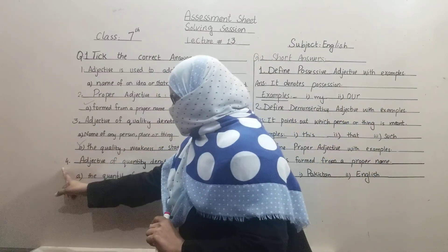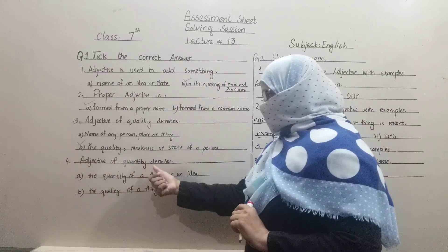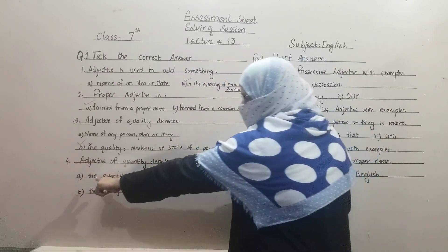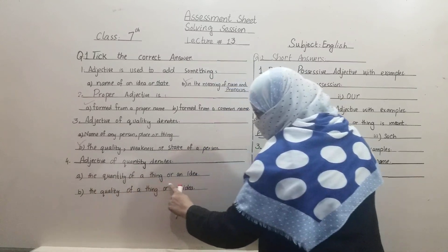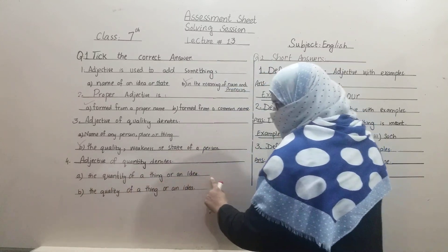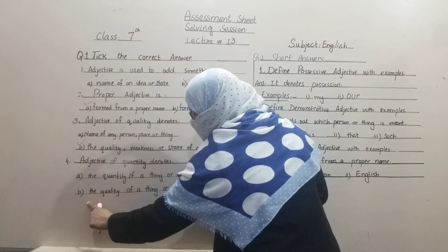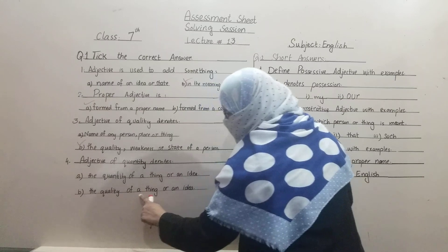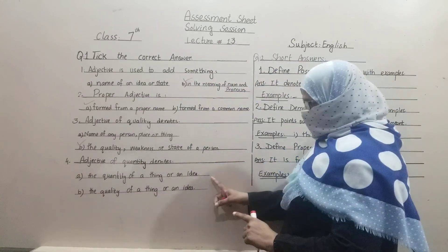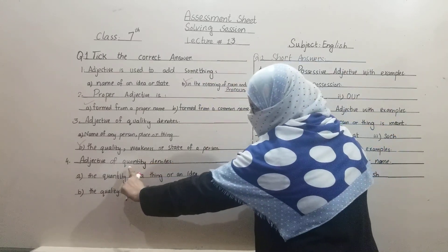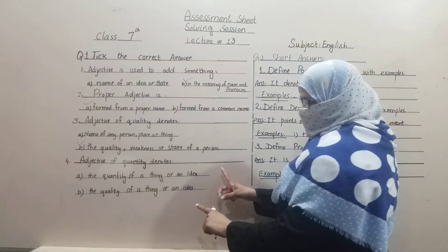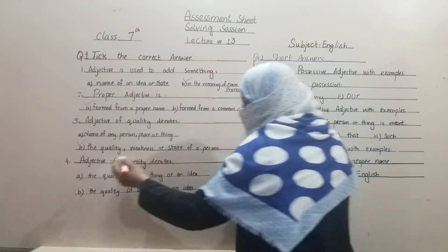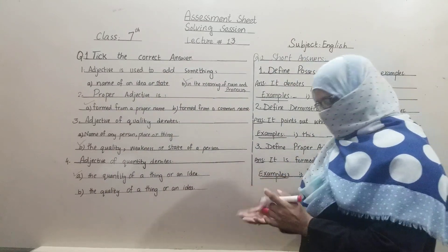MCQ 4 — adjective of quantity denotes: Option A: the quantity of a thing or an idea. Option B: the quality of a thing or an idea. The correct answer relates to quantity — quantity of a thing or an idea.